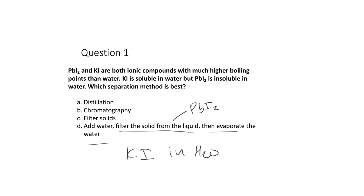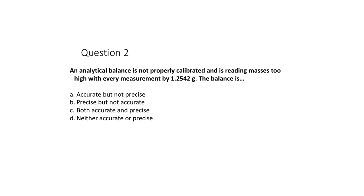Water boils at a lower temperature and KI has a very high boiling point, so we just evaporate the water and we're left behind with the KI. That's how we can separate lead iodide and potassium iodide. The answer is D.